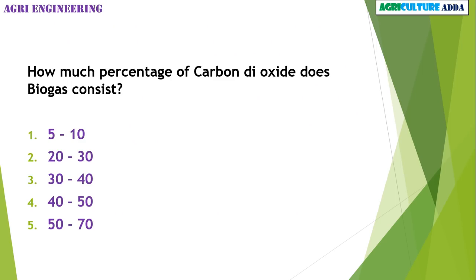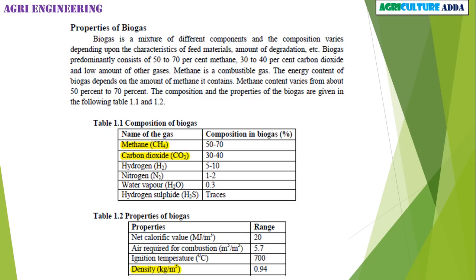In the agricultural engineering section: How much percentage of carbon dioxide does biogas consist of? 5–10%, 20–30%, 30–40%, 40–50%, or 50–70%? The answer is 40% carbon dioxide. In the composition of biogas, methane gas is the highest, followed by carbon dioxide, hydrogen, and nitrogen. The density of biogas is 0.94 kg per cubic meter.